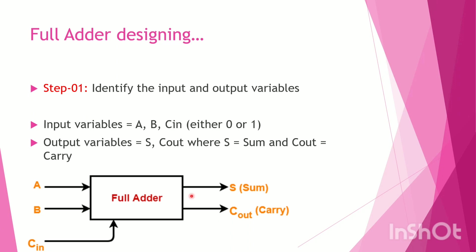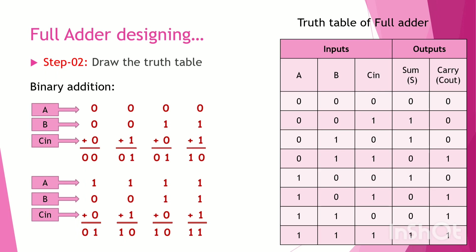For the Full-Adder design, we have two Half-Adders combined. The first Half-Adder takes inputs A and B. The third input C-in feeds into the second Half-Adder. With 3 inputs, we have 8 combinations in the truth table, and the outputs are Sum and Carry-out.